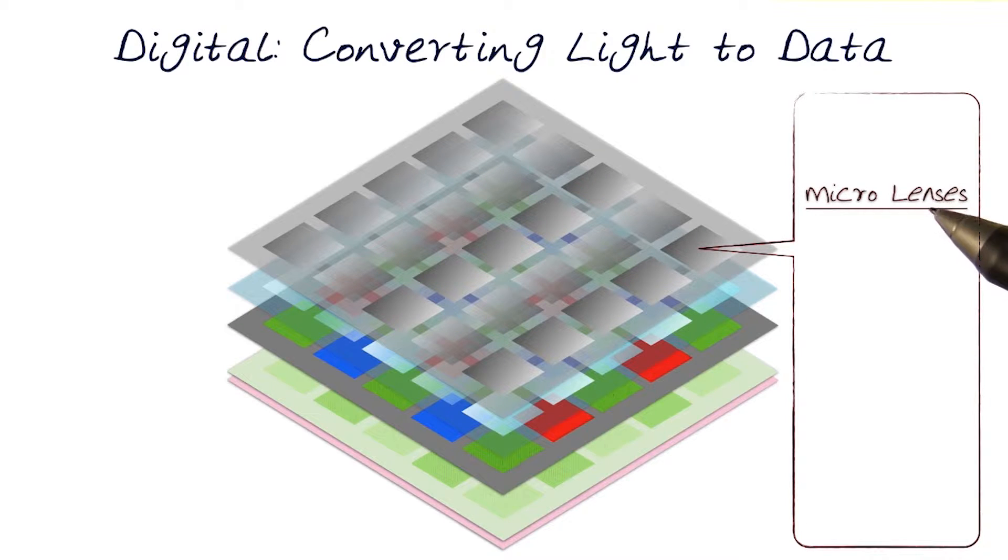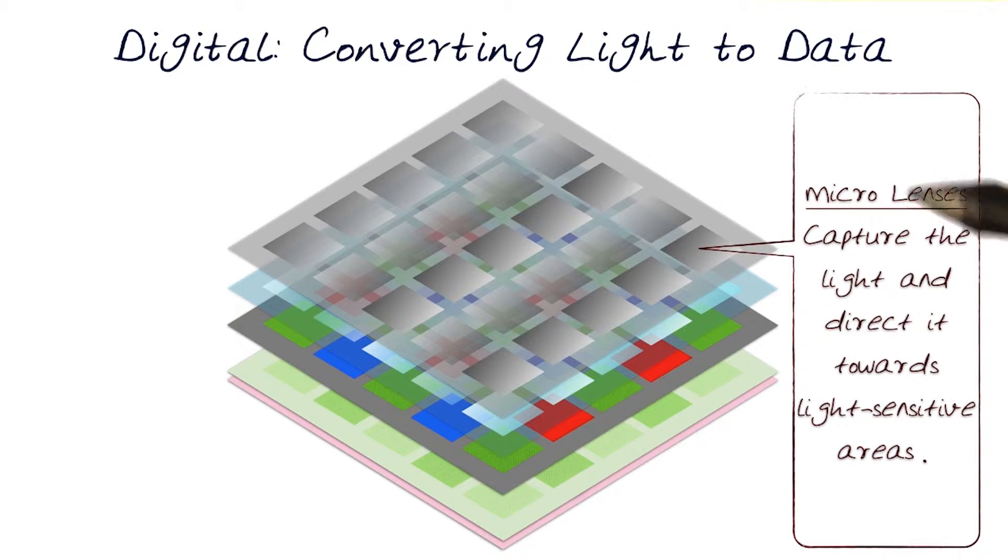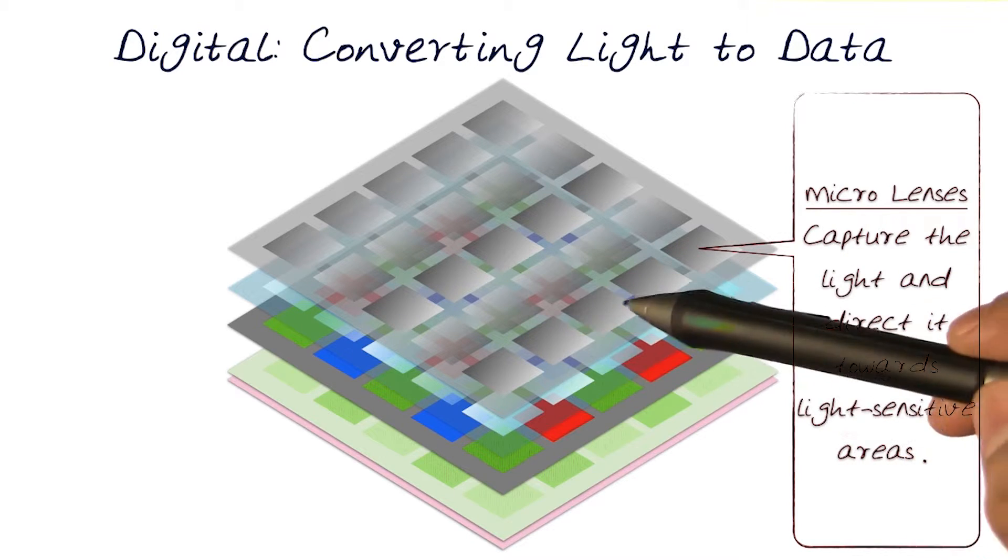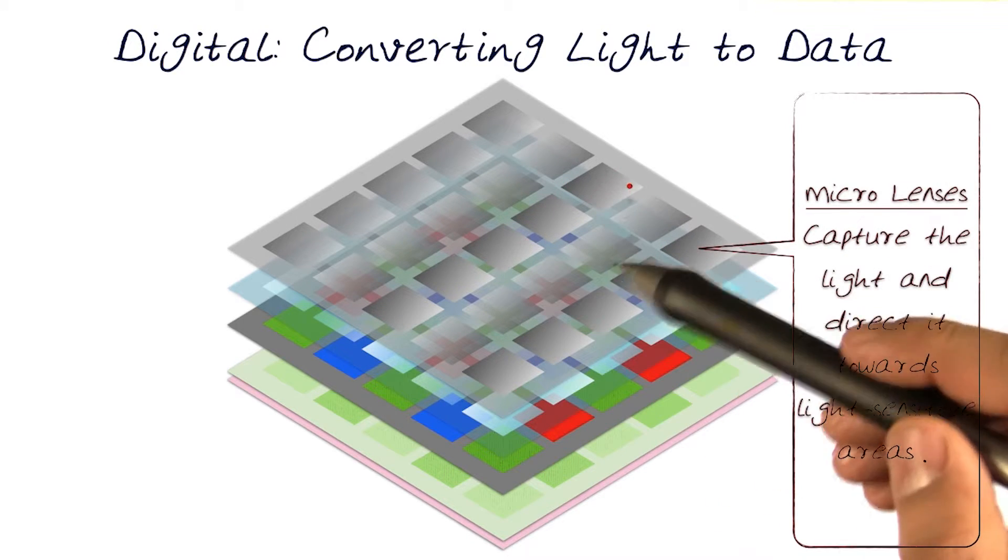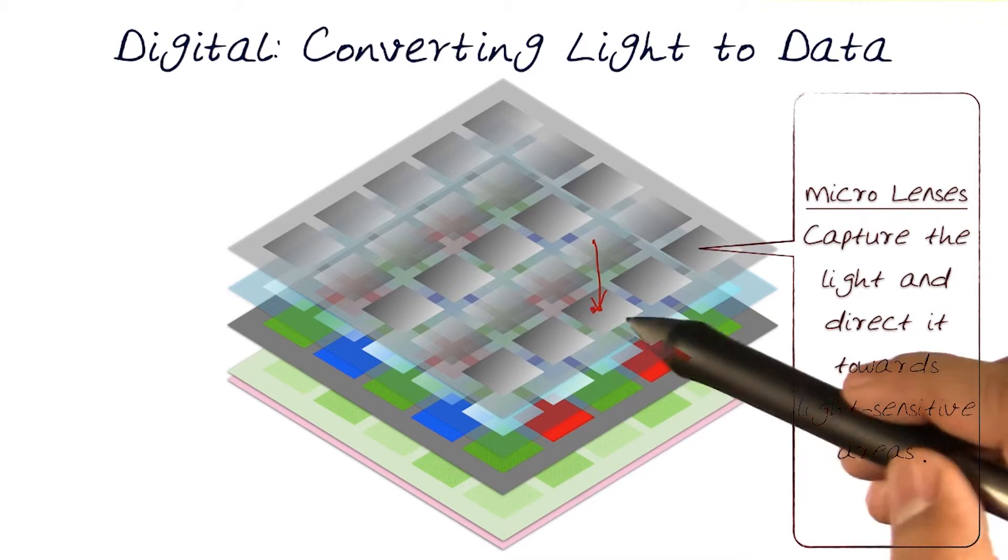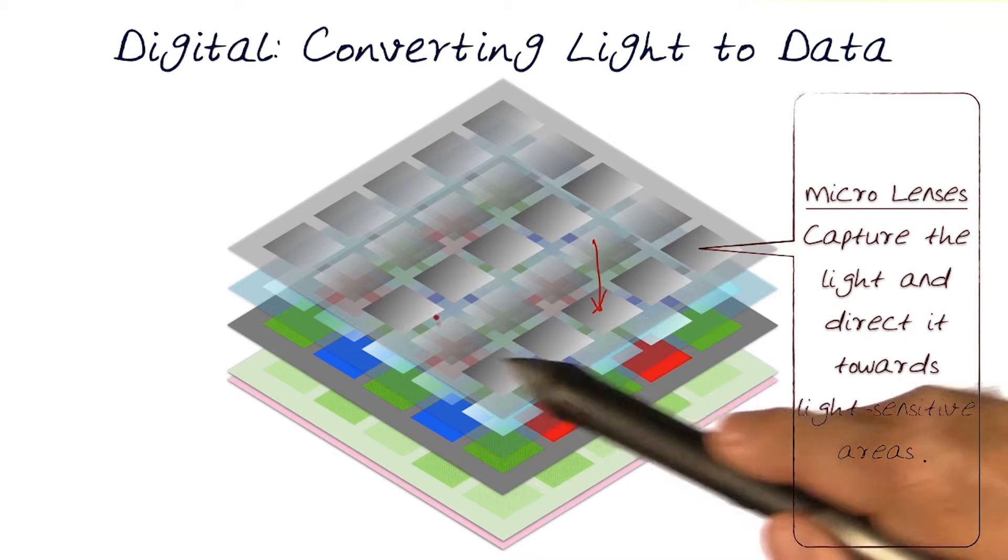So the first layer has a bit of an optical flavor. It's what is referred to as a micro lens. What it does in essence is it captures the light and directs it towards the light-sensitive areas beneath it. So when light hits these types of things, it focuses it down to the next layer so nothing is lost.